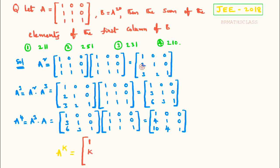Now here is an interesting point. For A square, 3 is there in this position. You know this formula: k into k plus 1 divided by 2. For A square, in place of k, if I write 2, I get 2 into 3 divided by 2. The 2's cancel, and you get 3 only. You can observe this.